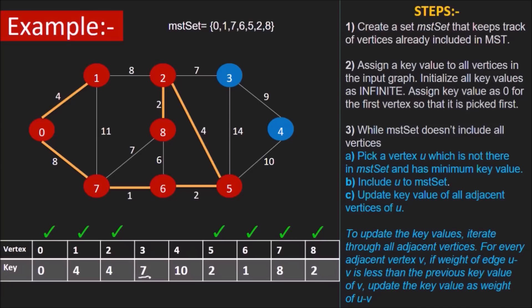And v3 will be picked now because its key is less than that of v4 which is the only other vertex left not in MST set. To update the keys, consider the only adjacent vertex of v3 which is v4. Its weight is less than the current key of v4 which was 10. So set v4's key to 9. Pick the last remaining vertex v4 and add it to the MST set.